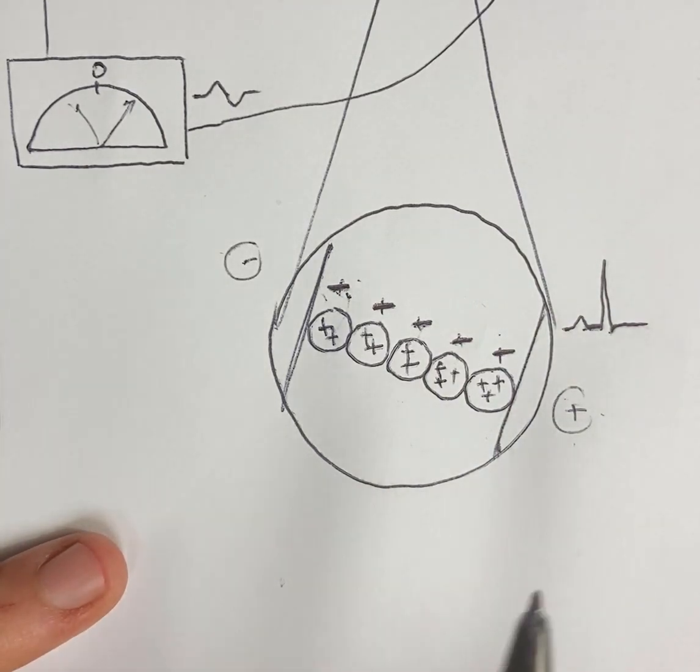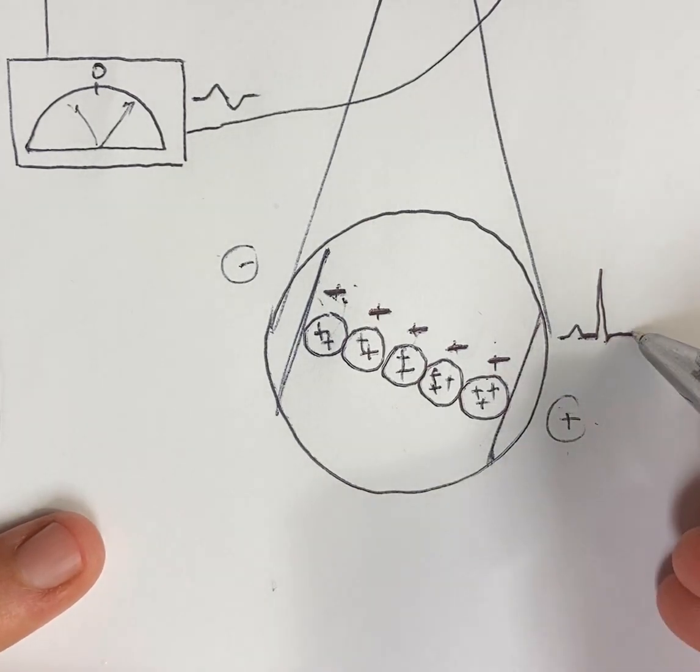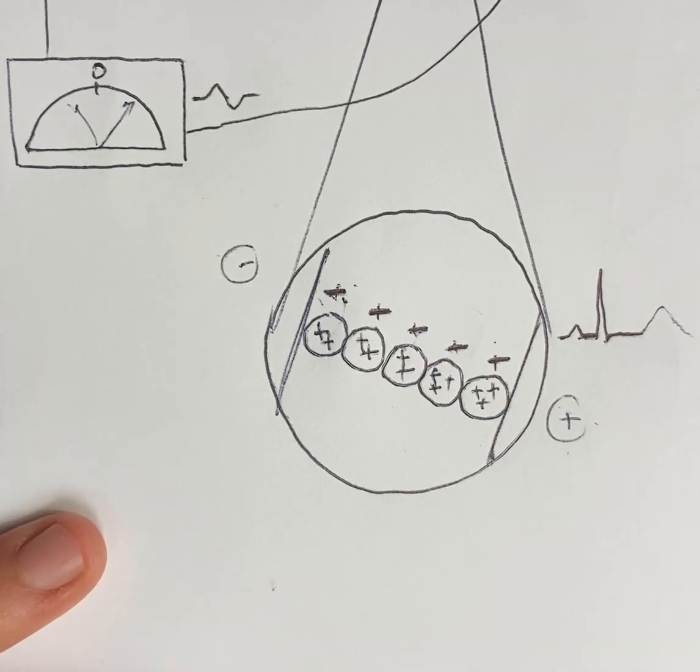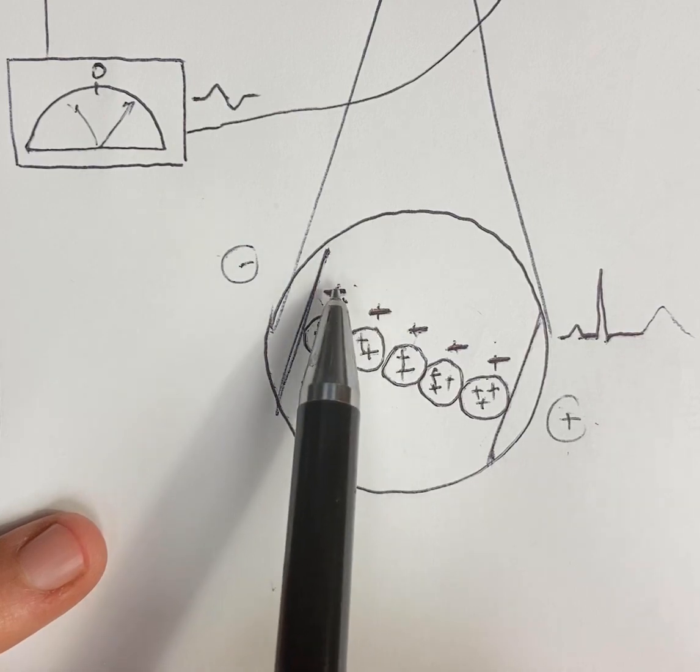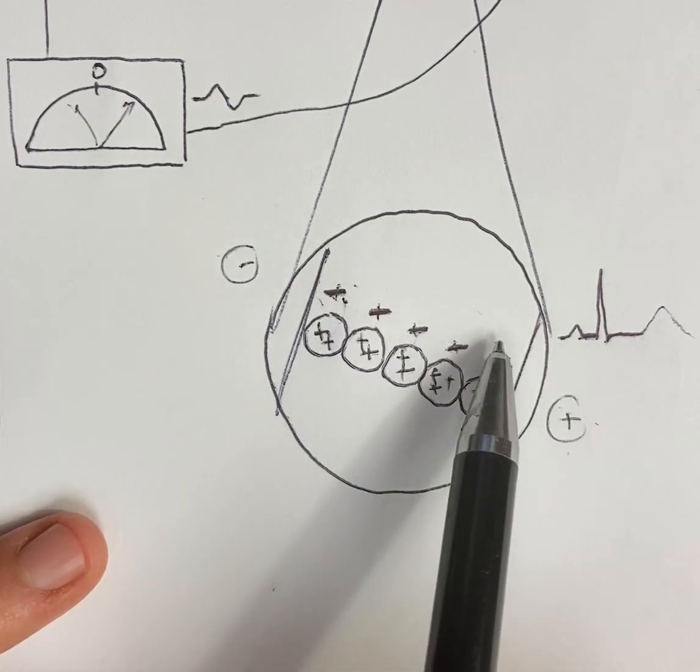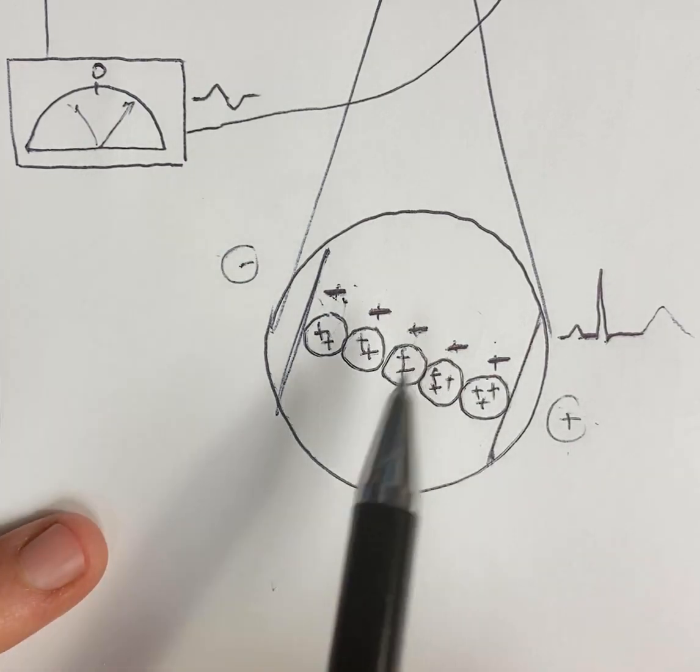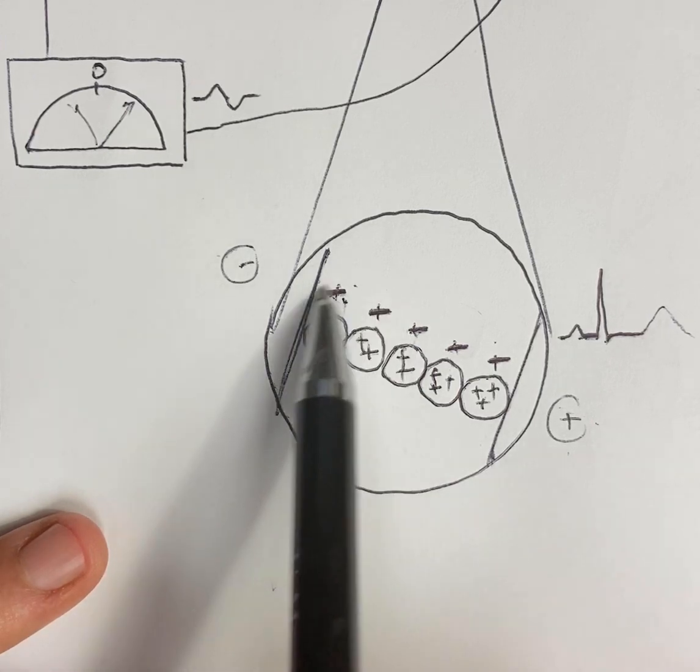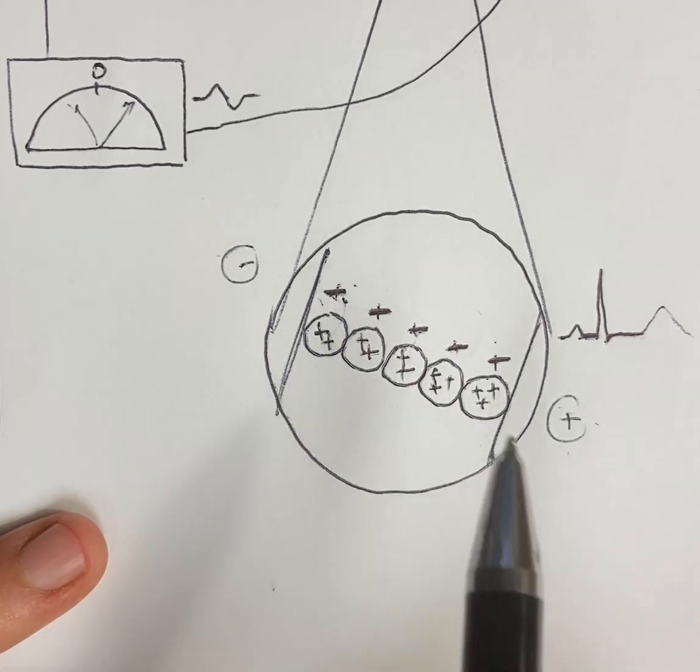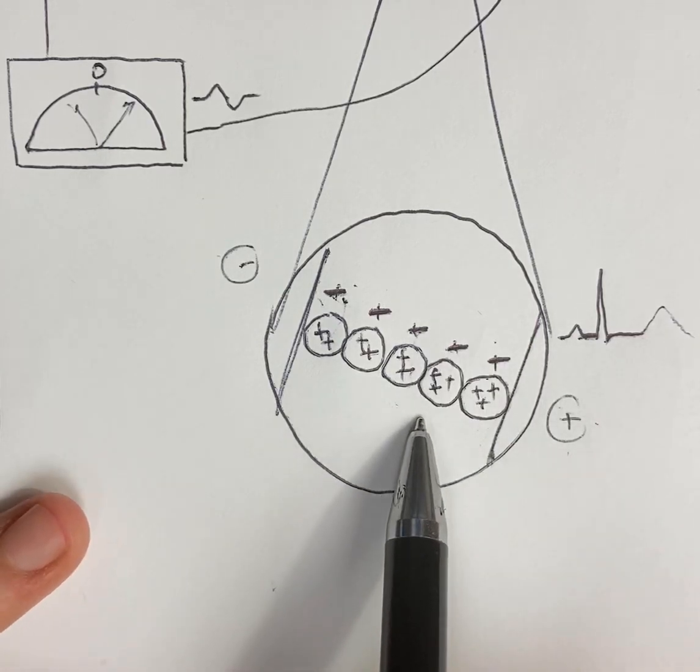This is where it comes back to the original question: why is the subsequent repolarization that follows a positive electrical event also positive? You would think that if the cells that depolarize first also repolarize first, you'd have an opposite pointing current, but you don't. The reason is that there's a unique difference between the endocardium and epicardium such that even though the subepicardial cells depolarized last,